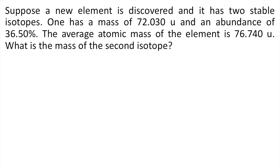Suppose a new element is discovered and it has two stable isotopes. One has a mass of 72.030U and an abundance of 36.50%. The average atomic mass of the element is 76.740U. What is the mass of the second isotope?